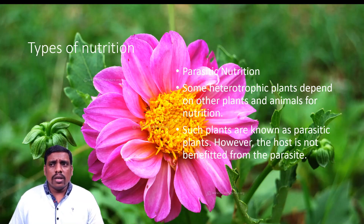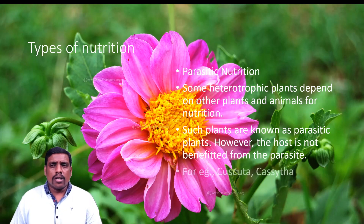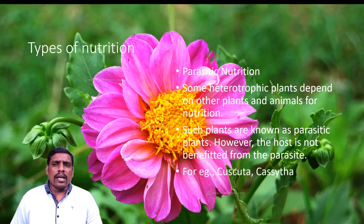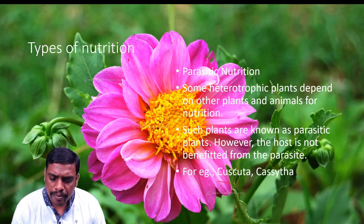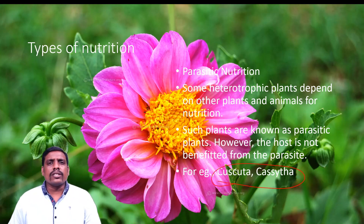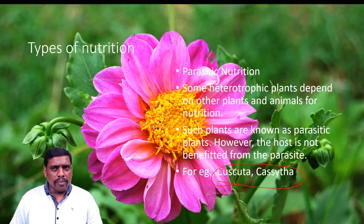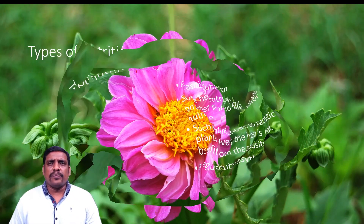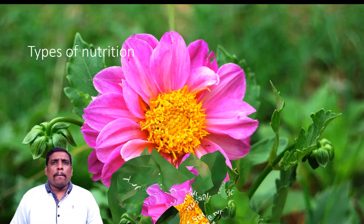In parasitic nutrition, the host is not benefited from the parasite. For example, plants like Cuscuta are very familiar and good examples of parasitic nutrition.